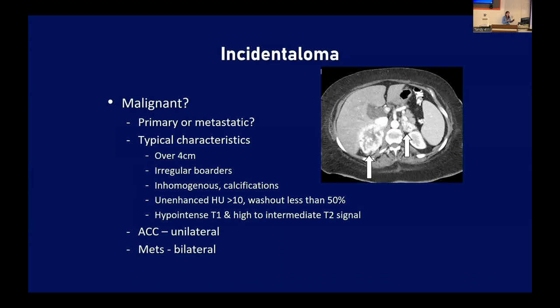On the flip side, malignant lesions are often large — greater than four centimeters — with irregular borders, inhomogeneous appearance, and frequent calcifications. Hounsfield units are higher, at least 10, with low washout on contrast. On MRI, hypointense on T1 with high to intermediate T2 signal. Unilateral malignant lesions raise more concern for adrenocortical carcinoma, while bilateral lesions are more concerning for metastases.